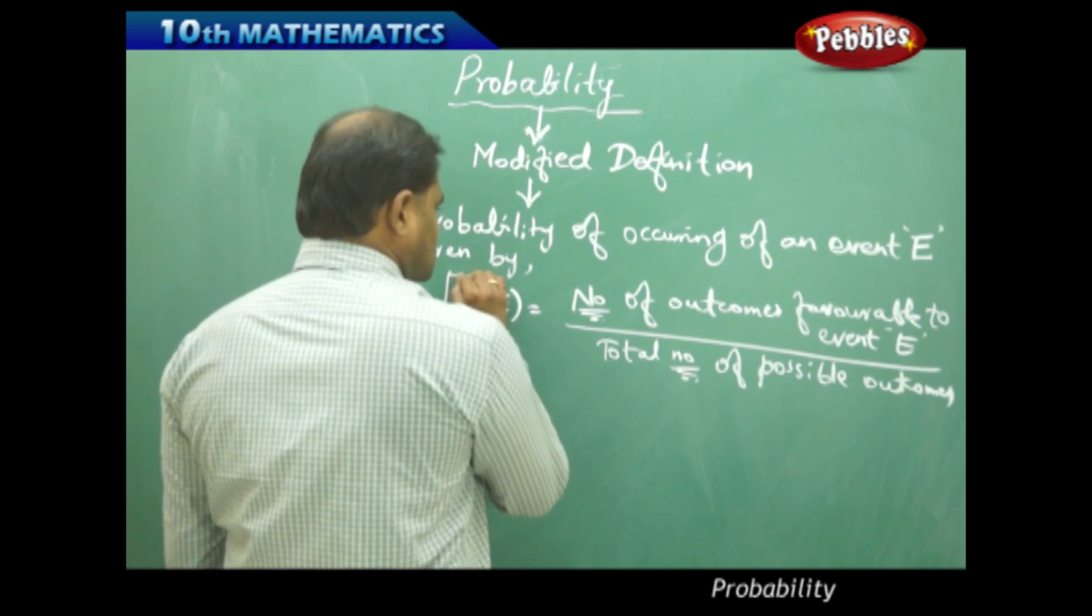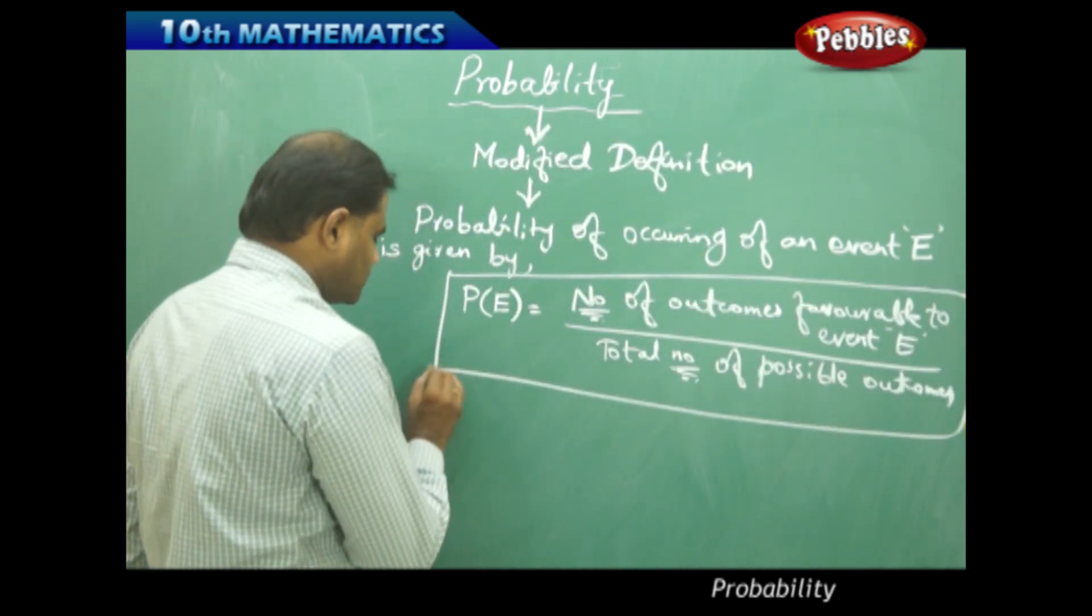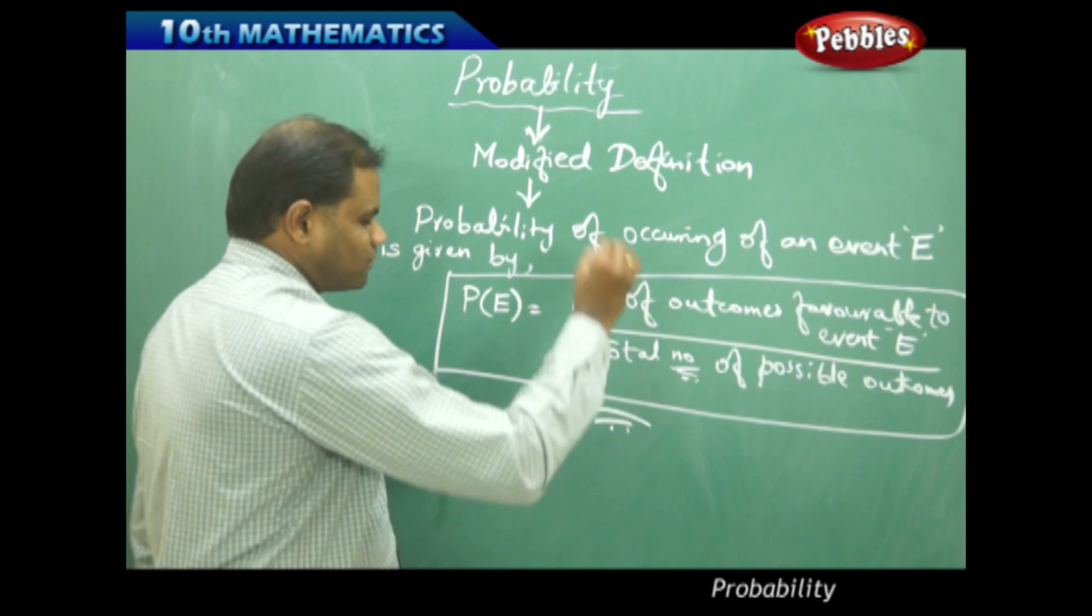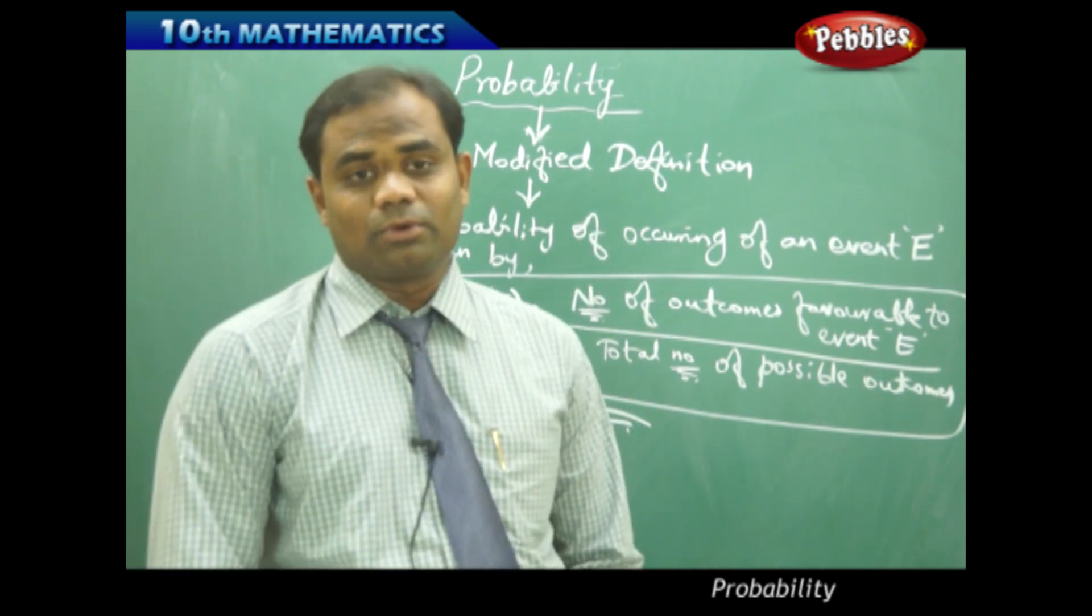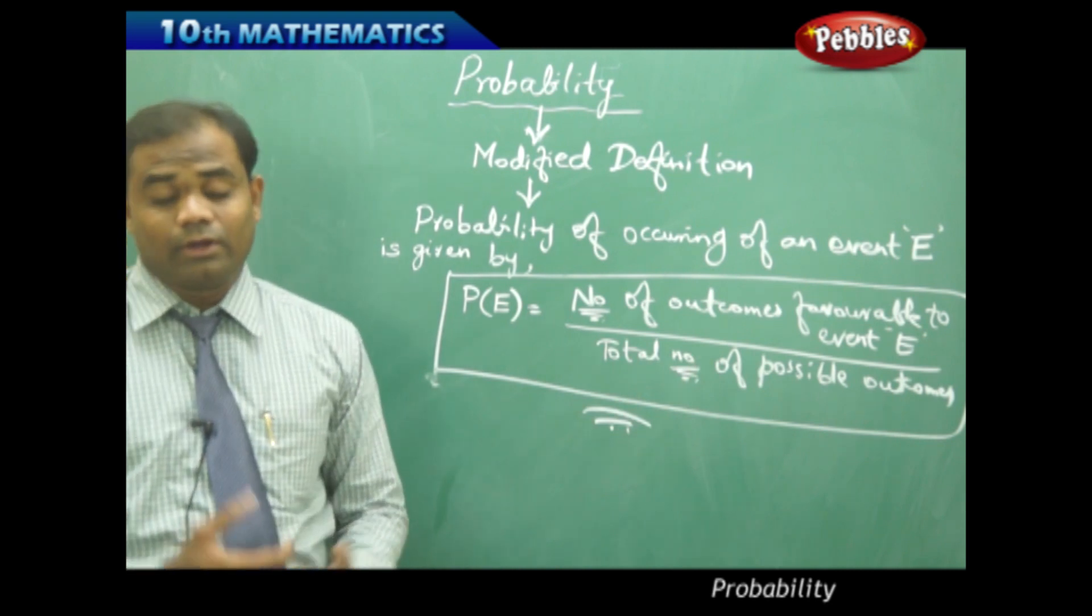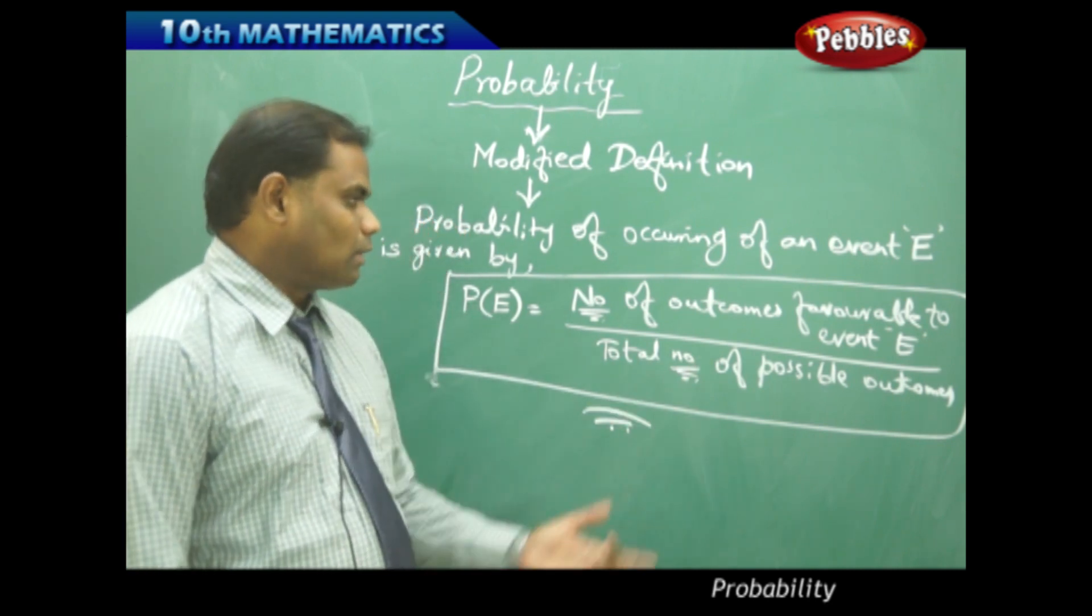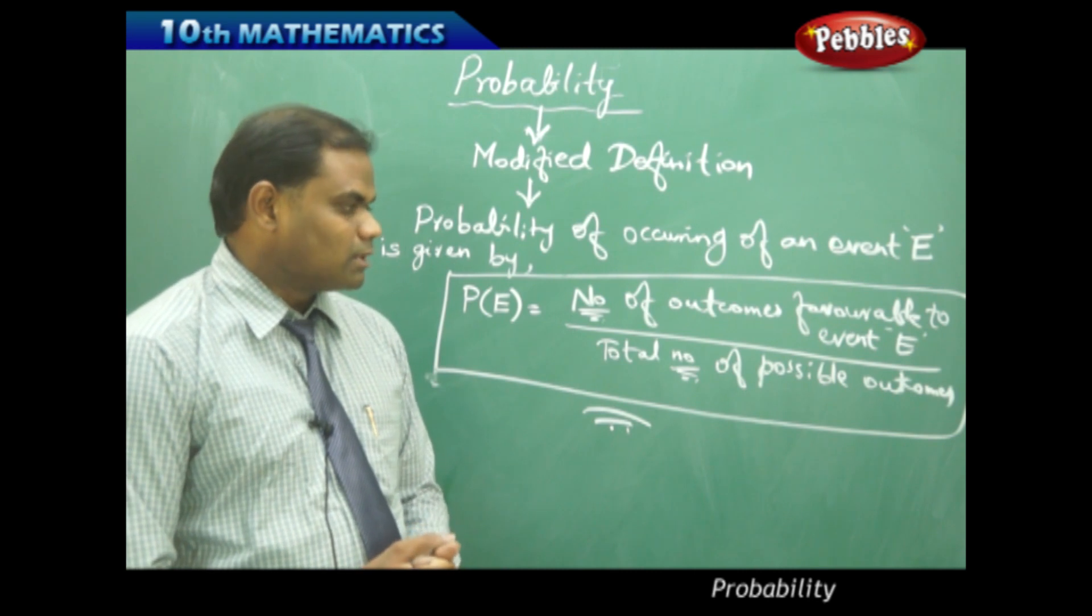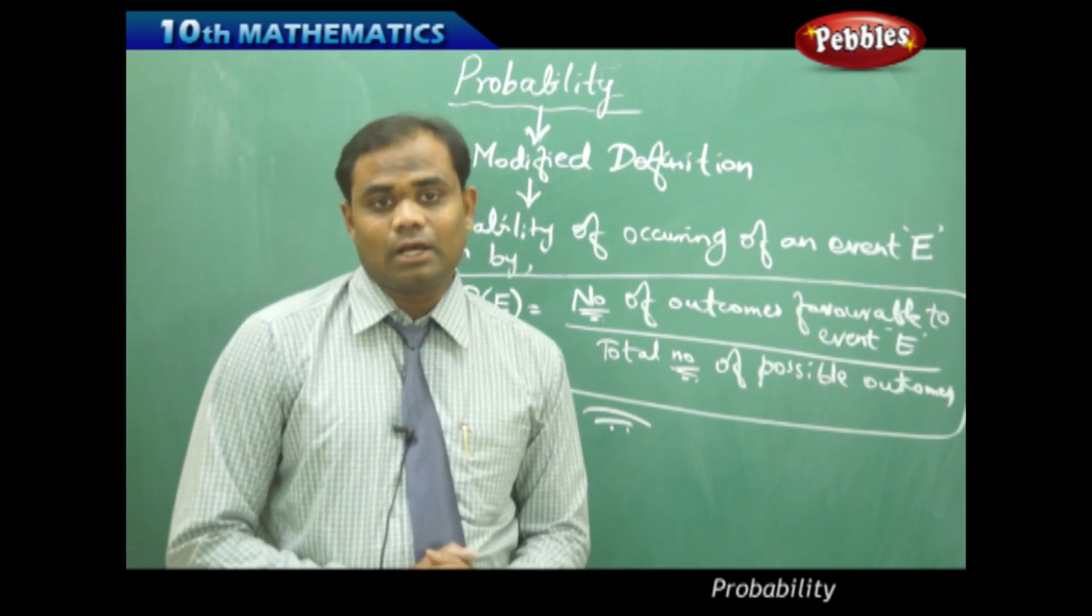This is the most modified definition of probability: the theoretical probability of happening of an event E, or occurring of an event E, is given by the number of outcomes favorable to event E divided by the total number of possible outcomes.